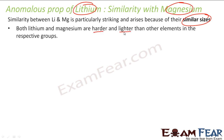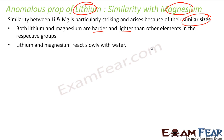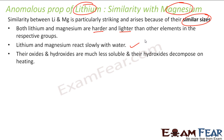The first similarity is that both lithium and magnesium are harder and lighter than most elements in their respective groups. For example, lithium is harder and lighter than potassium, and magnesium is harder and lighter than calcium. They also both react slowly with water.